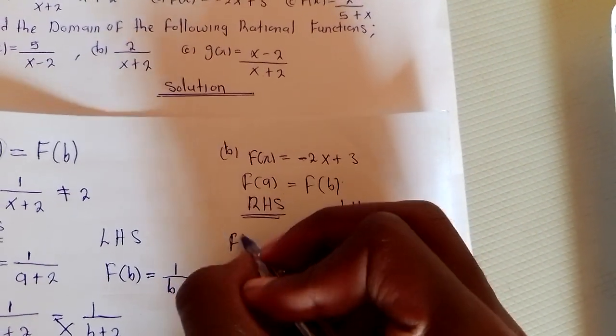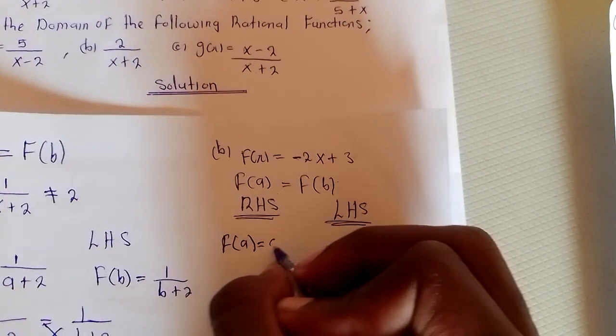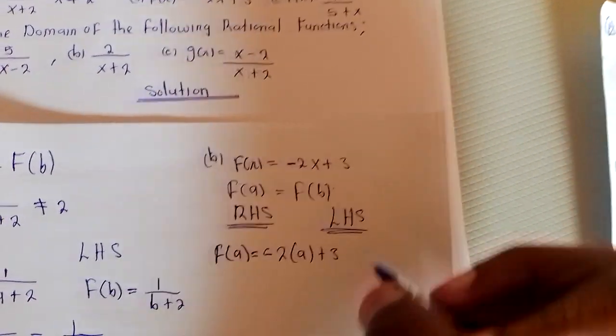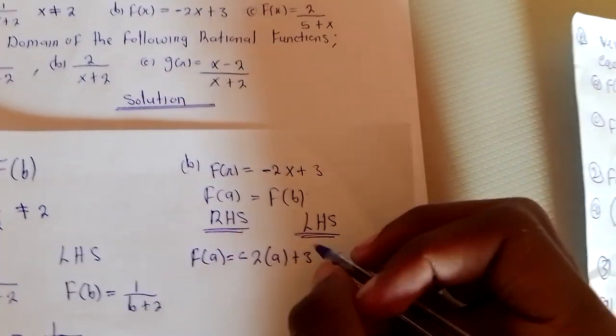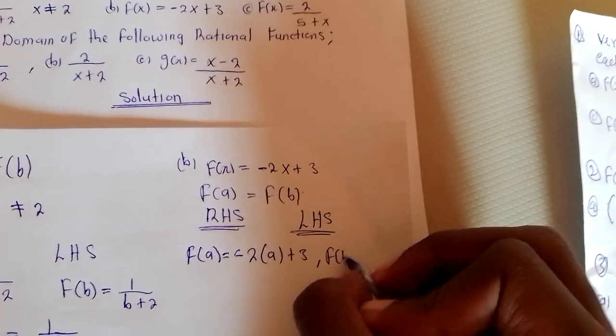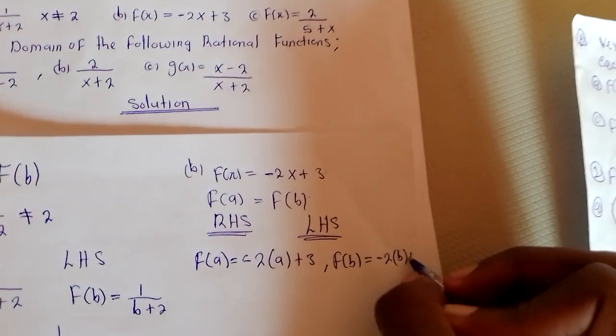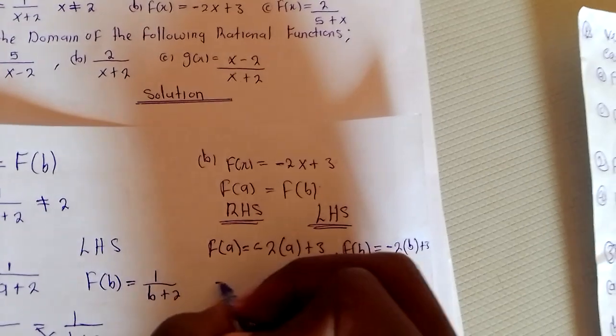Then, we say F input of A equal to negative two A plus three, comma, then F input of B is going to equal to negative two B plus three.